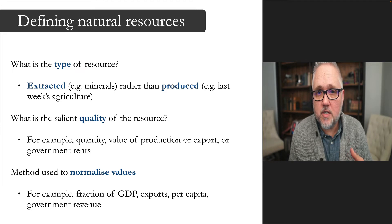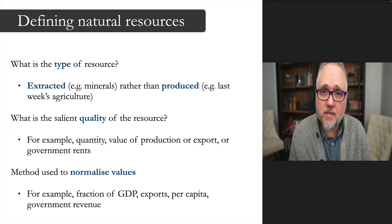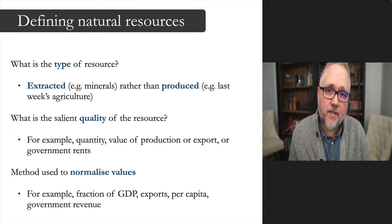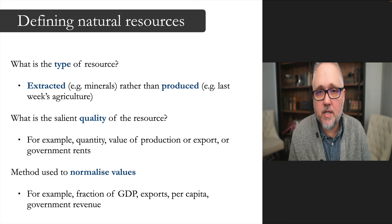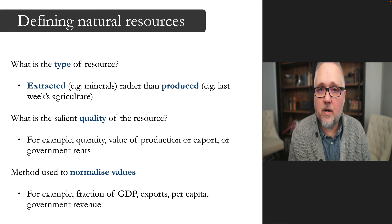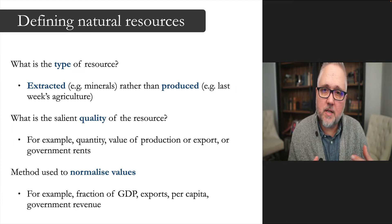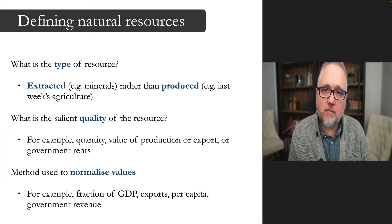The third question is how should we normalize values to understand the scale of resource production in a way that's meaningful to our research questions. Several means are common in the conflict literature: the economic value of natural resource production relative to GDP, how much it represents as a share of total exports, the export value relative to population to normalize by per capita, or as a percentage of government revenue — how much of resource rents actually pays for the government budget and public services.